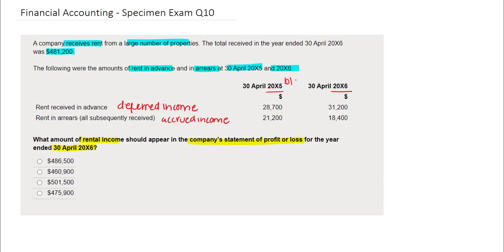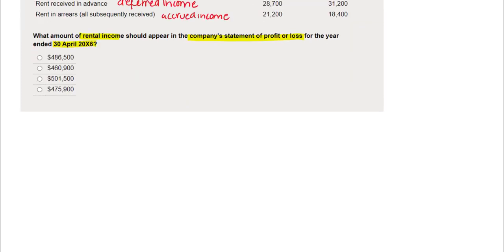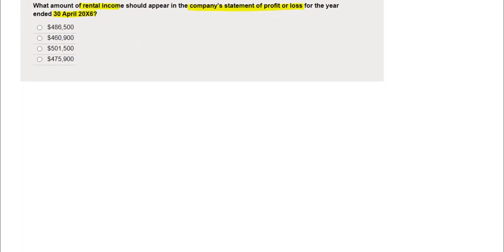You're presented with information for X5 and X6. The balances given for X5 will be the opening balances, or the brought forward figures, and the balances given at X6 are the closing, or carry forward, figures. The best way to approach a question like this is the shortcut formula approach, which I'm going to show you.